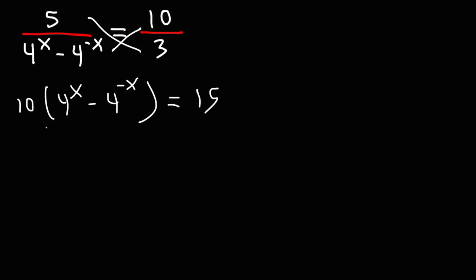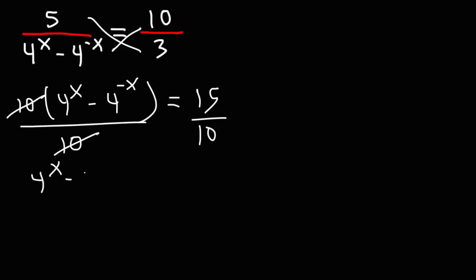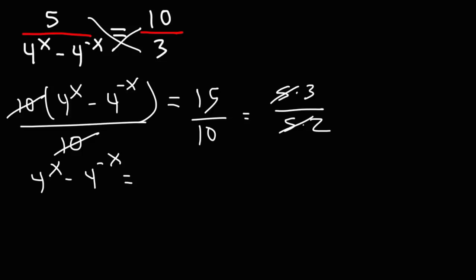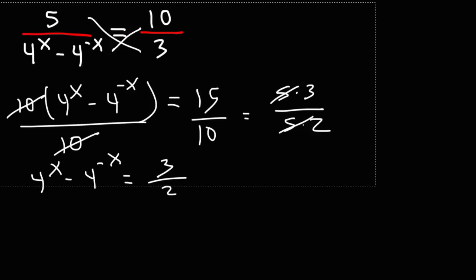Now what I'm going to do at this point is divide both sides by 10. On the right side, we can reduce the fraction 15 over 10. 15 is 5 times 3, and 10 is 5 times 2, so 15 over 10 reduces to 3 over 2. So this is what we now have.